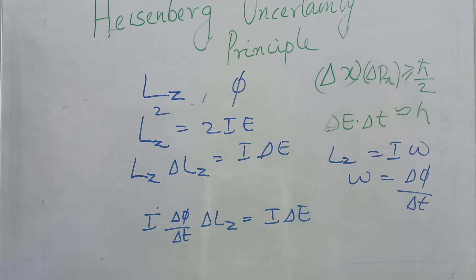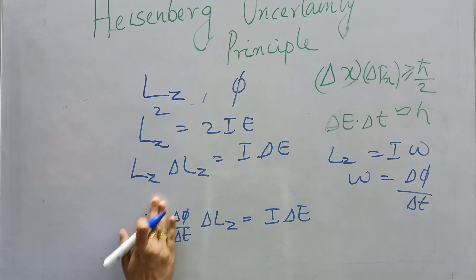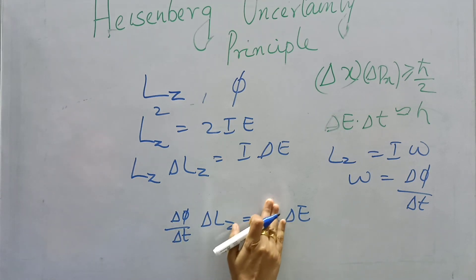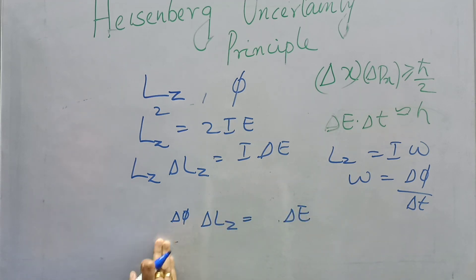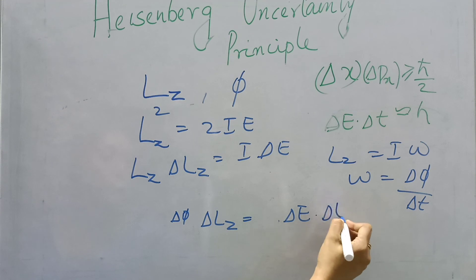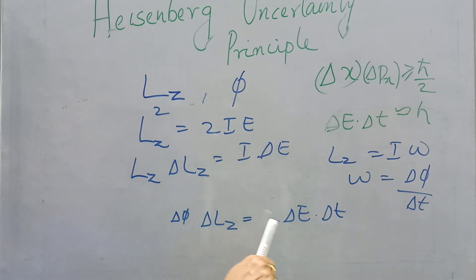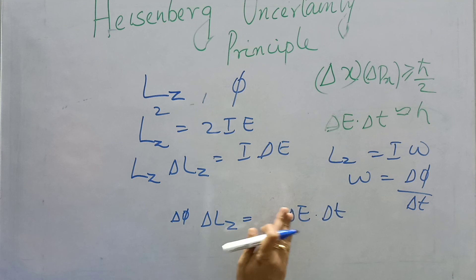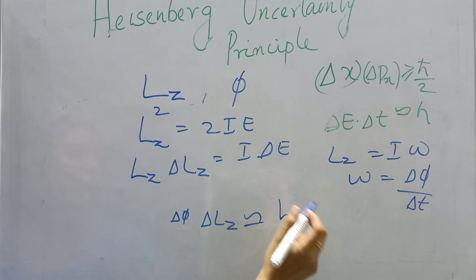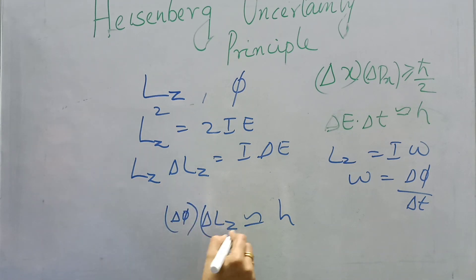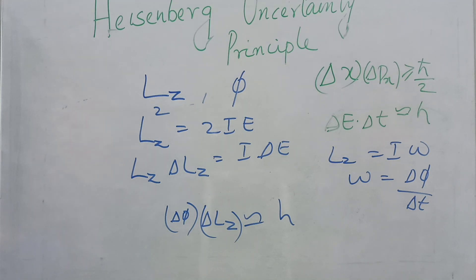The moment of inertia I cancels from both sides. Cross-multiplying gives delta E into delta t of order h-cross. Therefore, delta L into delta phi is also approximately of the order of h-cross.